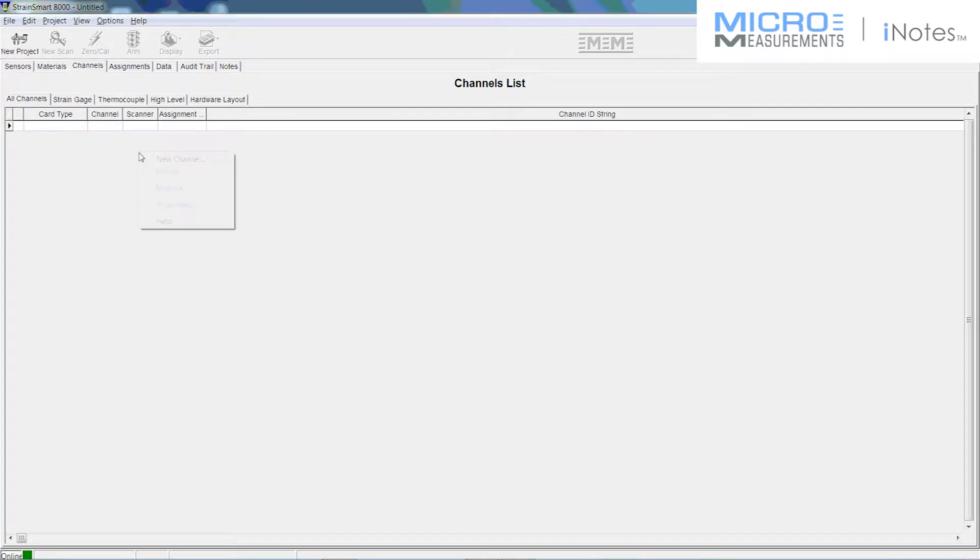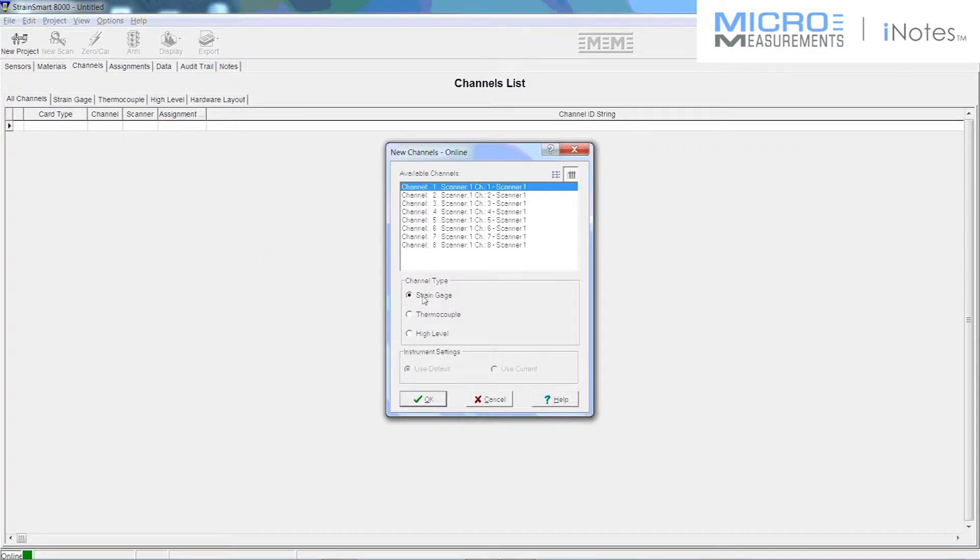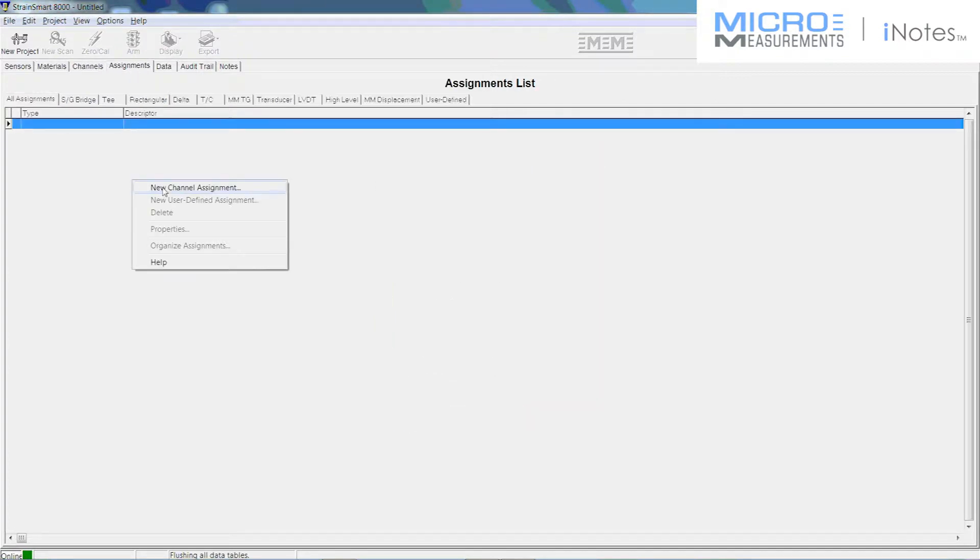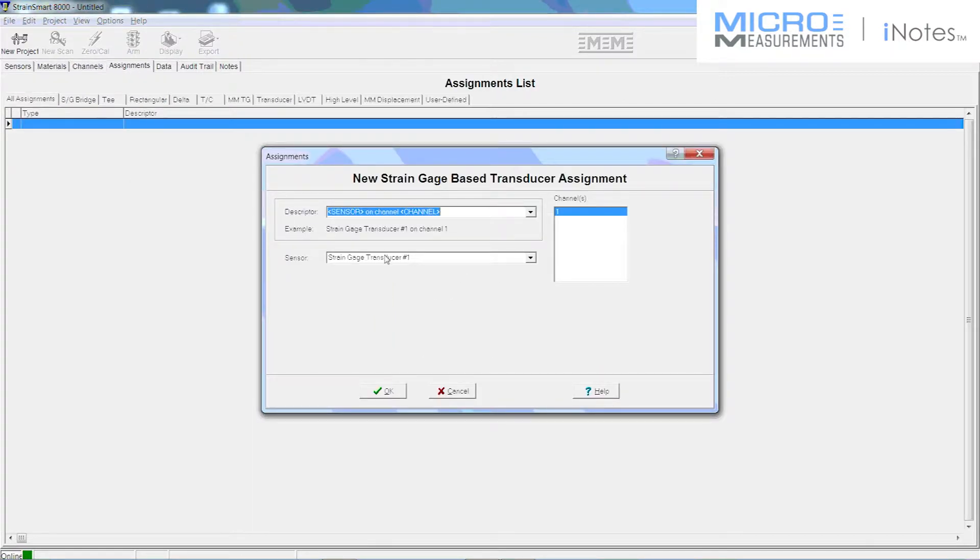I'm then going to tell the system that Channel 1 is a strain gauge input. I can program it to a voltage or a thermocouple as well. So I need to tell it it's going to accept a strain gauge. And then under assignments I'm going to relate the channel to the sensor. So the system knows that I've got a strain gauge based transducer into Channel 1.